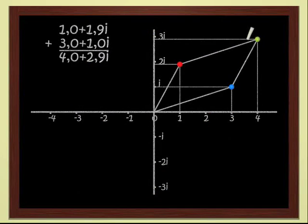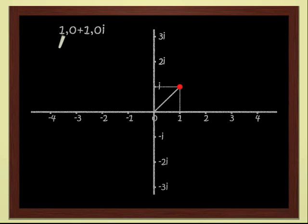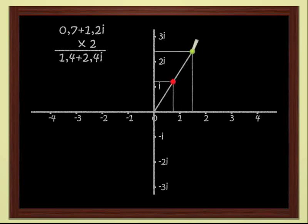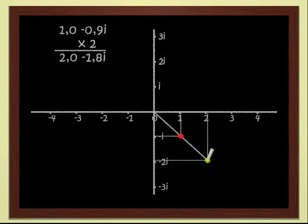Much more interestingly, these complex numbers can also be multiplied, just like real numbers. Let's see. We know how to multiply a complex number by 2, for instance. 2 times 1 plus 2i gives 2 plus 4i. Geometrically, multiplying by 2 is easy. It's just scaling up by a factor of 2. If we double the red point, we get the green point.